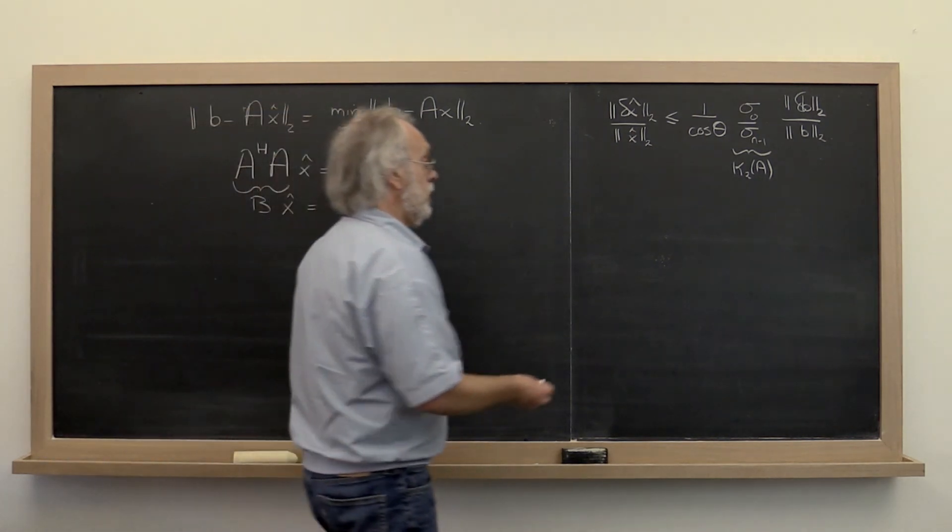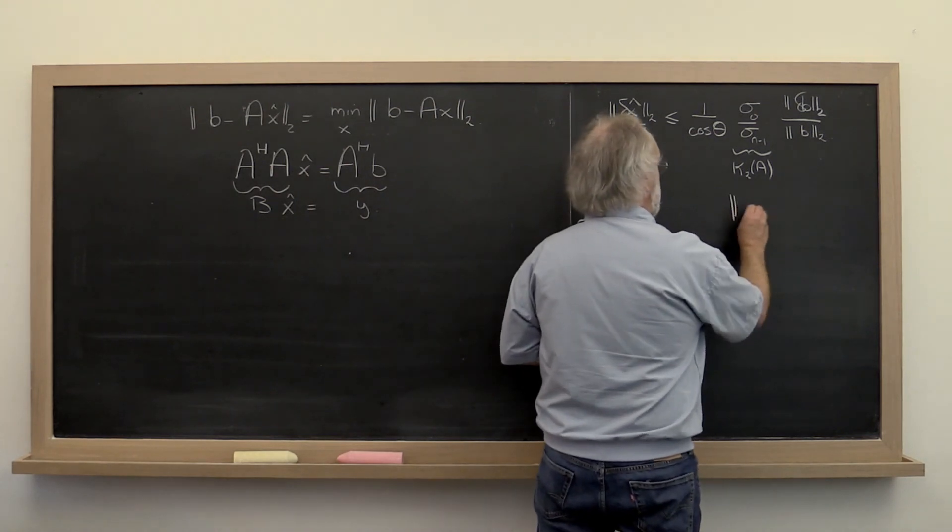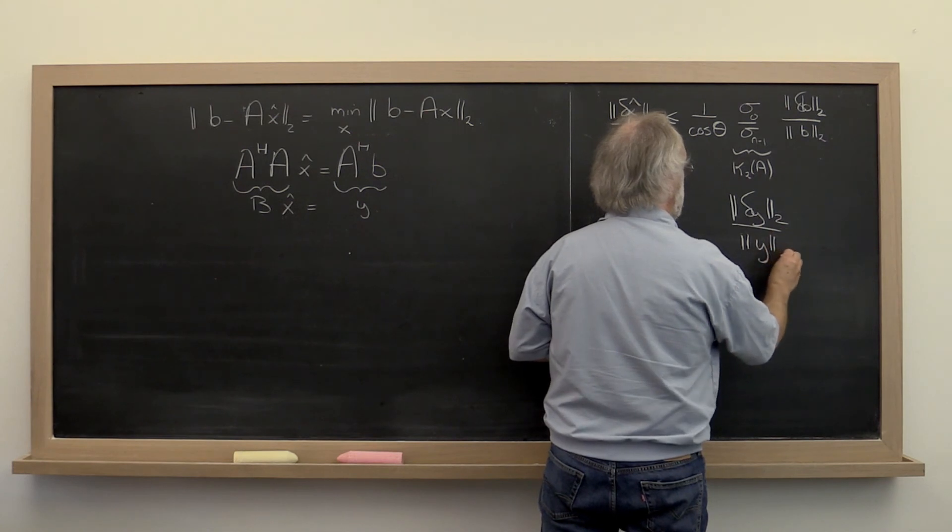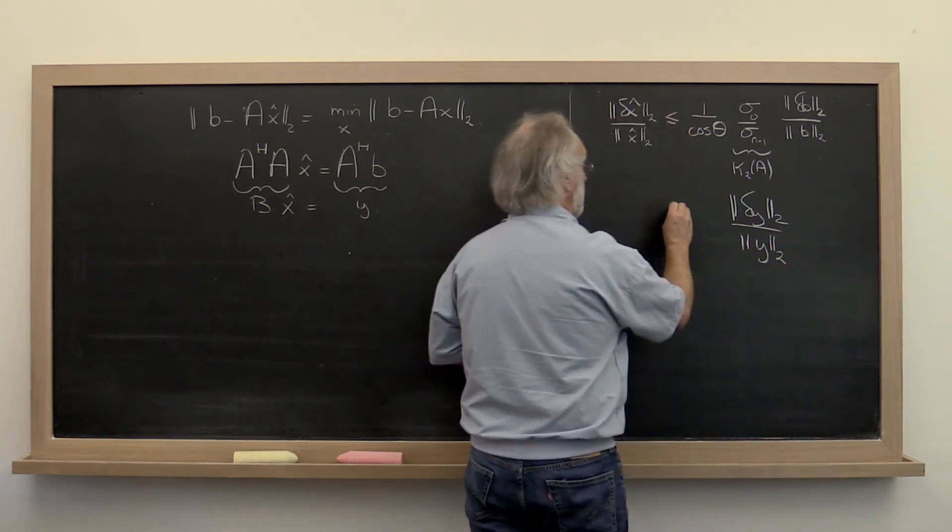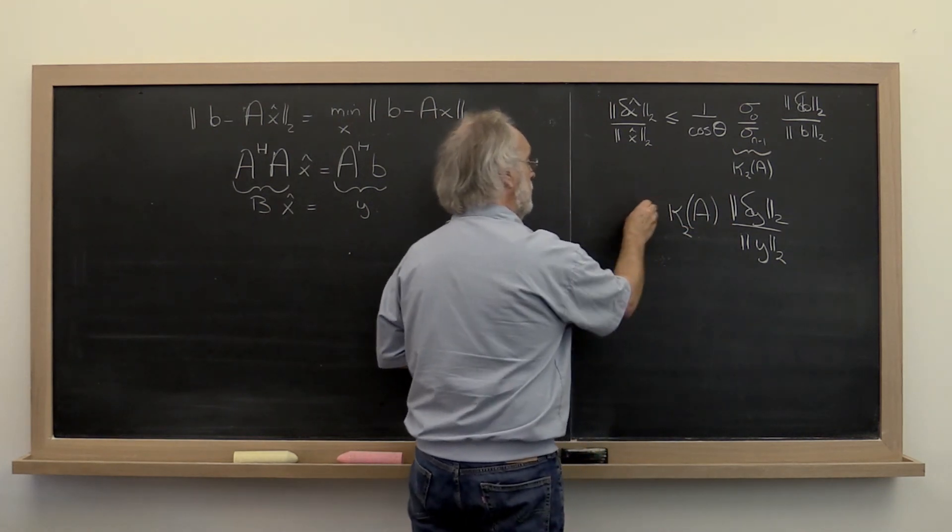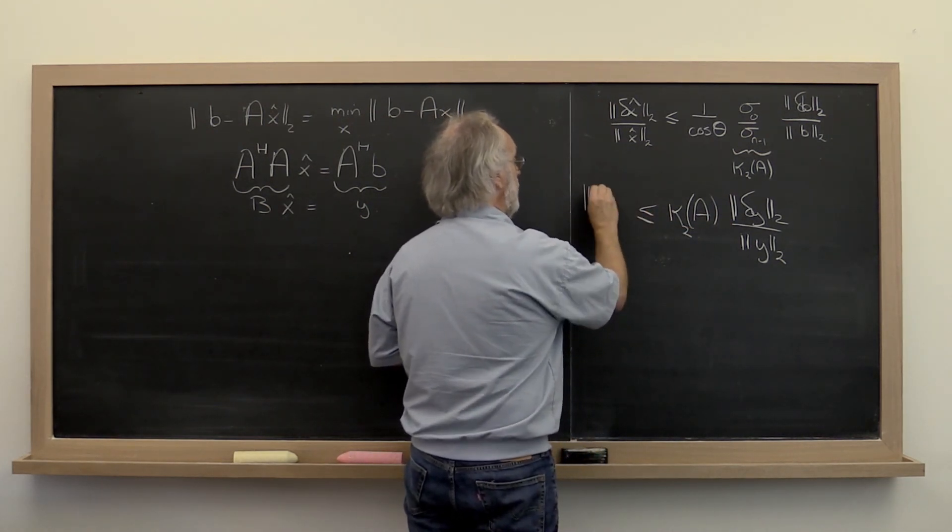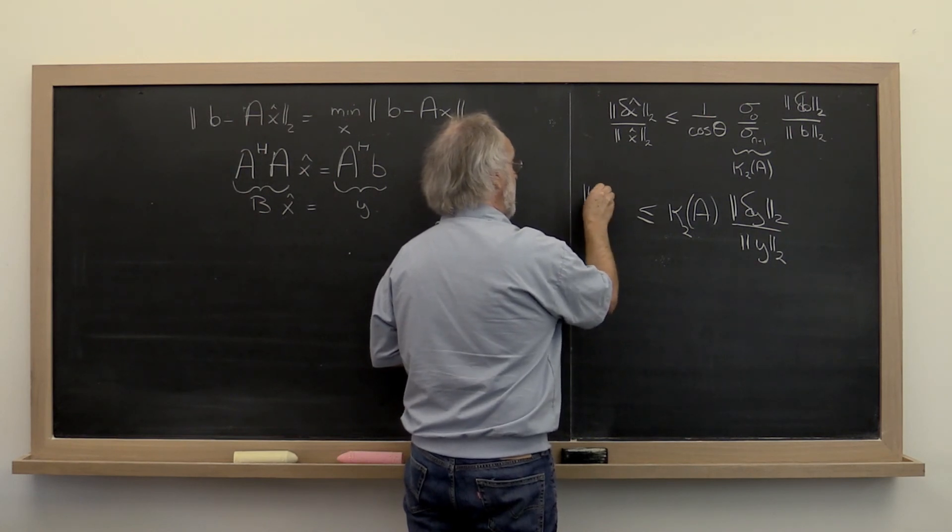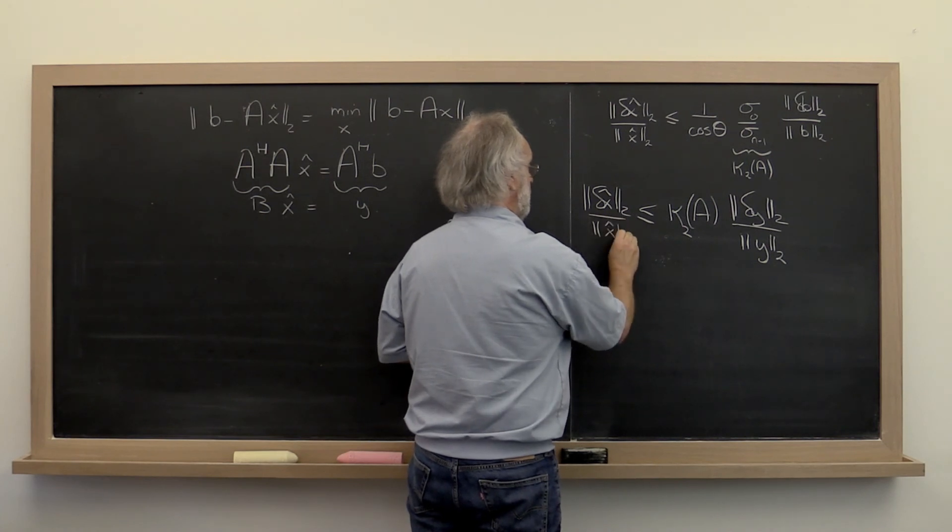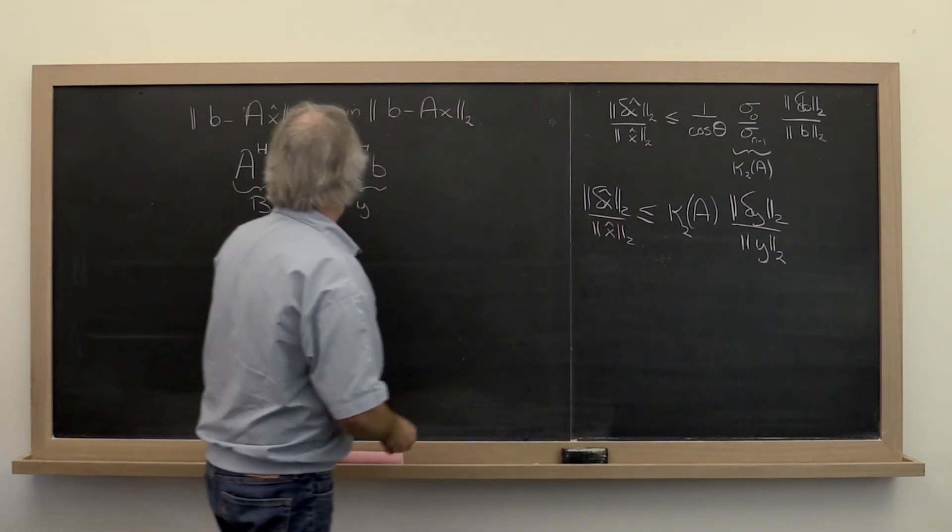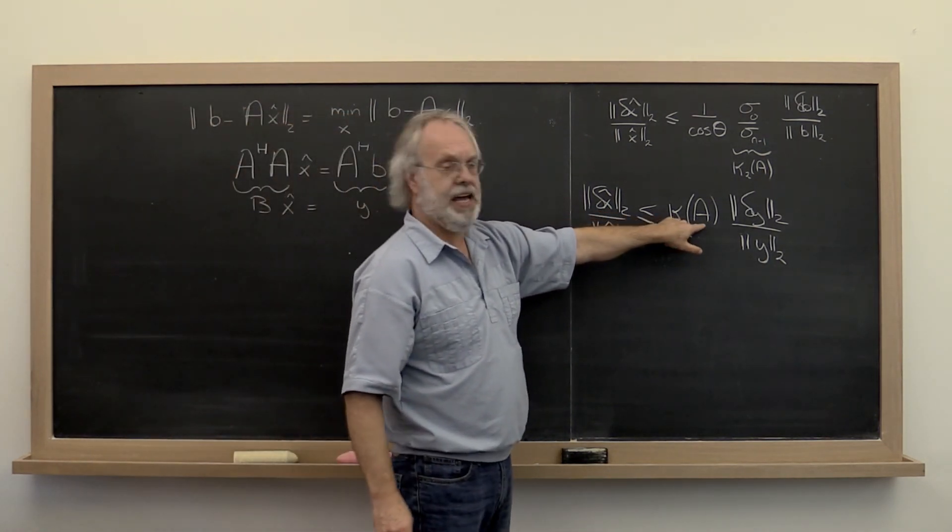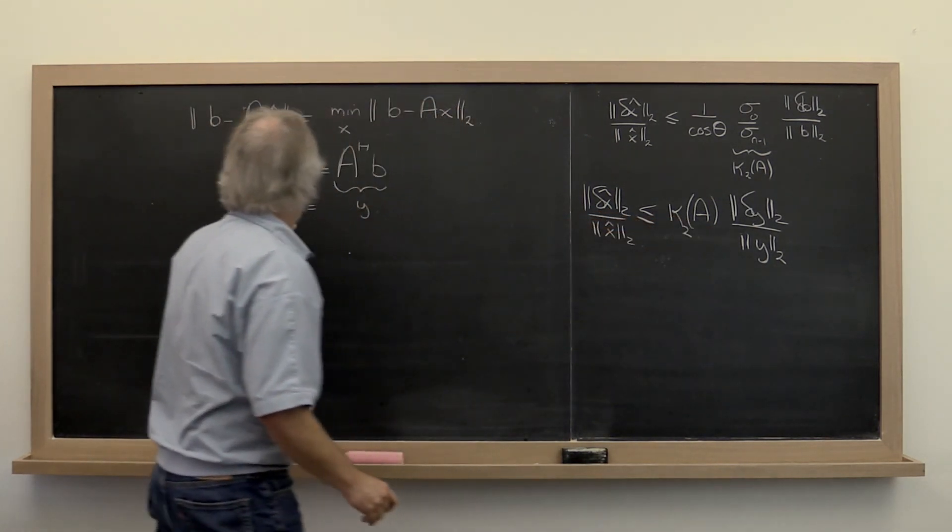And what do we know about how an error in Y might be amplified into an error in x hat? Well, there we know that a change in Y, a relative change in Y, may be amplified by the condition number of A. Of course, it's the condition number relative to the 2 norm now. And that then puts a bound on the relative error in x hat that comes out of this. Now notice that's, now wait a second, that's not matrix A here. That is now matrix B.